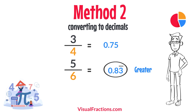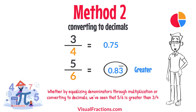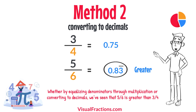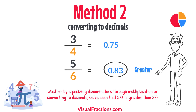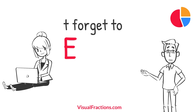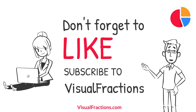And there you have it. Whether by equalizing denominators through multiplication or converting to decimals, we've seen that 5 sixths is greater than 3 quarters. If you found this tutorial helpful, go ahead and smash that like button and don't forget to subscribe to the channel.